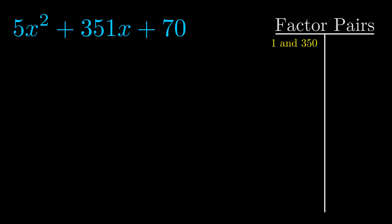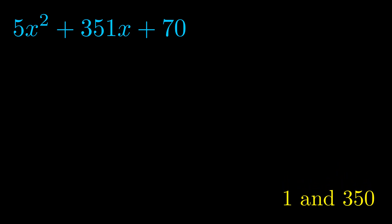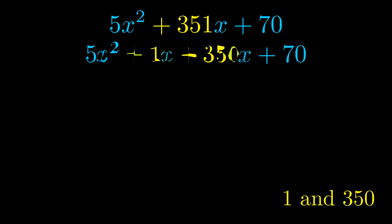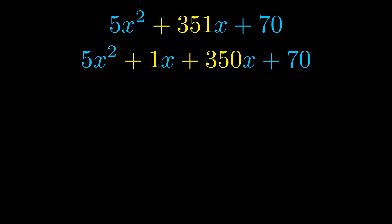Now once we have this factor pair, what we want to do is use it to split up the b value. Notice how I'm going to keep my first term and my last term completely unchanged. It is only this b term highlighted in yellow that gets expanded into this correct factor pair.